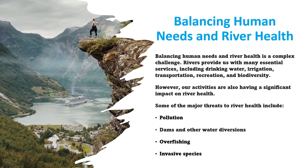Dams and other water diversions can alter the natural flow of rivers, disrupting fish migration, sediment transport, and other important ecological processes. Overfishing can deplete fish populations, which can have a cascading effect on river ecosystems. Lastly, invasive species can outcompete native species for food and habitat and can also transmit diseases.